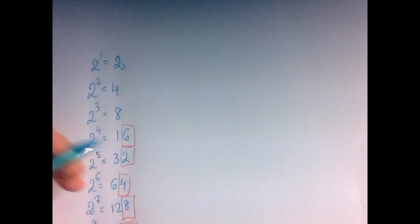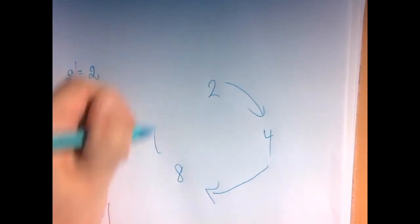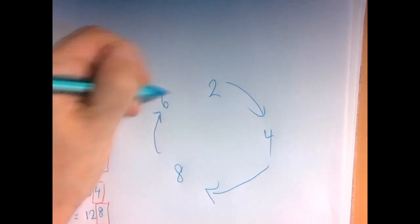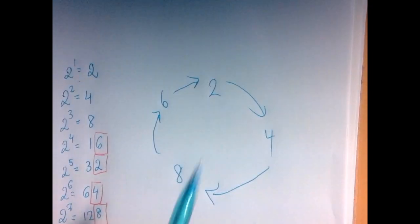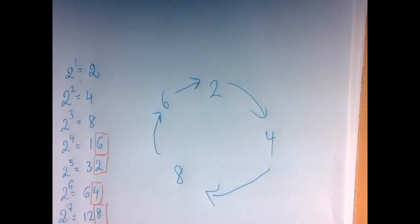We have this pattern of 2, then 4, then 8, then think 16, 6, and then back to 2. So we have 4 different values, but they come in a pattern. This is called an orbit.